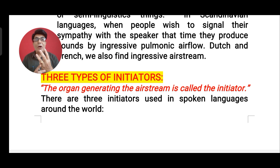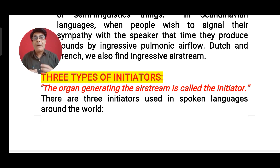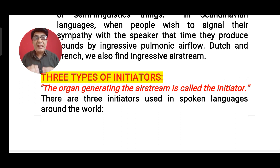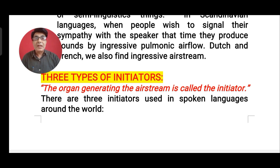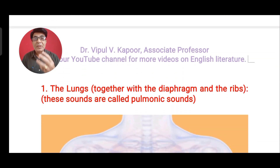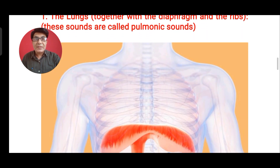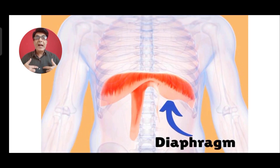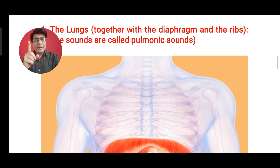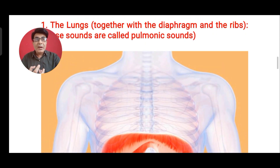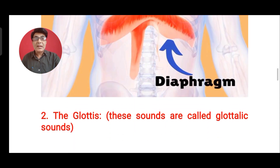There are three types of initiators in this mechanism. Initiator means the sound begins from three different places — there are three places from where the sound is initiated. The organ which generates and initiates a sound is called an initiator. Number one is the lungs. In the lungs, we have the diaphragm, and from that particular place, the air flows upward and outside. Such sounds are called pulmonary sounds in phonetics.